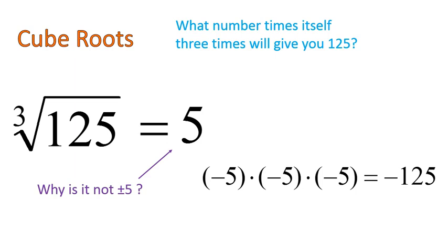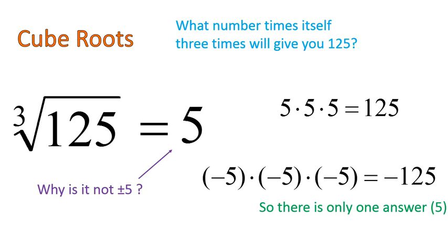Negative 5 times negative 5 times negative 5, three negative numbers, actually give you a negative answer. However, positive times a positive times a positive would give you that positive number. So the cubed root of a positive number gives you one answer. There's only one answer, and it's positive 5.